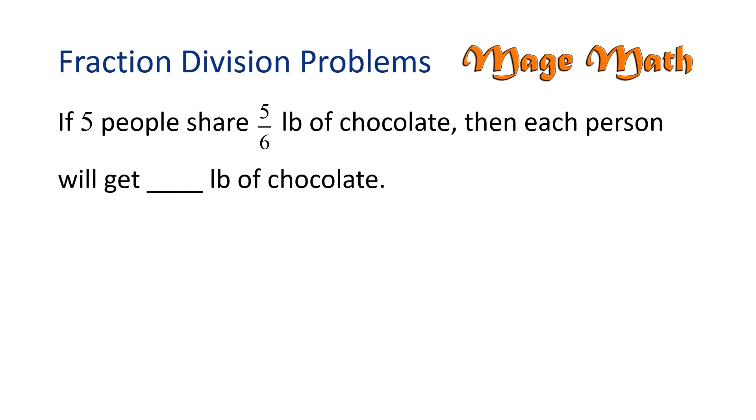Today we're going to work on fraction division problems. If 5 people share 5 sixths pounds of chocolate, then each person will get blank pounds of chocolate. Let's draw a picture to represent the problem, starting with a whole chocolate bar.